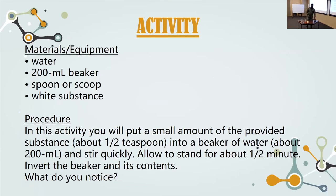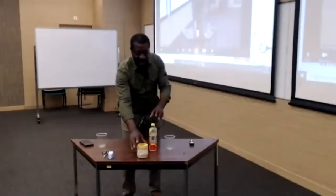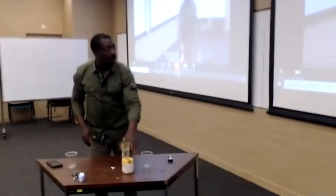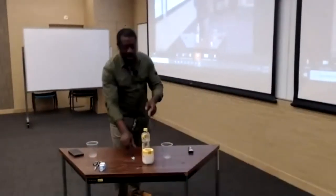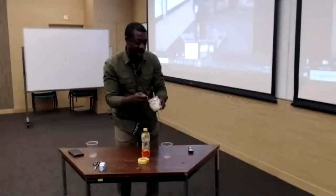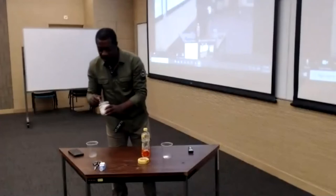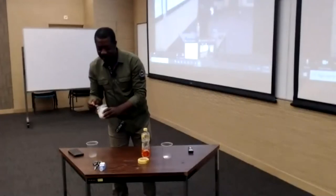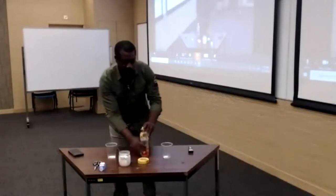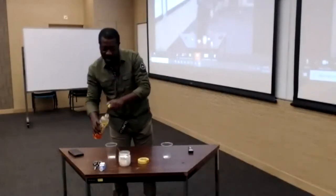In this activity, what do we need? We need a beaker — I have a plastic cup — some water, a spatula or a spoon, and a white chemical which I have here in this bottle. So what are we supposed to do? We're supposed to put a little bit of this chemical, just about half or a quarter of a teaspoon, into the beaker. Let me do two so we have a backup. I put another one here. Then I'm going to put a little bit of water and observe what is going to happen.